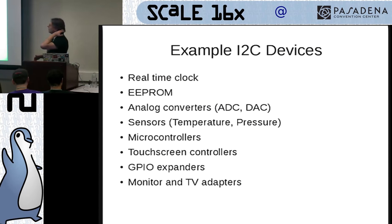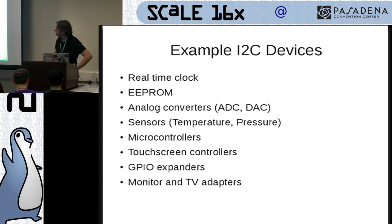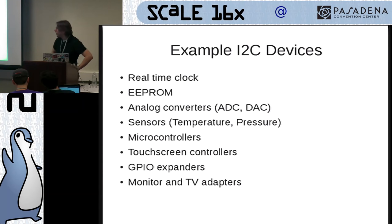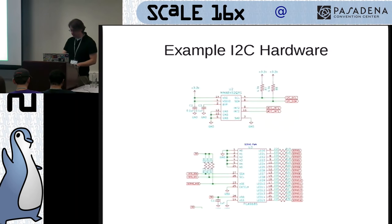Here are some example devices that use I2C: real-time clocks, EEPROMs, analog converters — which I use quite a bit — sensors like temperature, pressure, accelerometer, etc. Microcontrollers can actually be master or slave. There are also touchscreen controllers, usually four-wire resistive if they're I2C, GPIO controllers, and monitors and TVs have DDC — kind of I2C for detecting monitor parameters when you plug in so it automatically works.